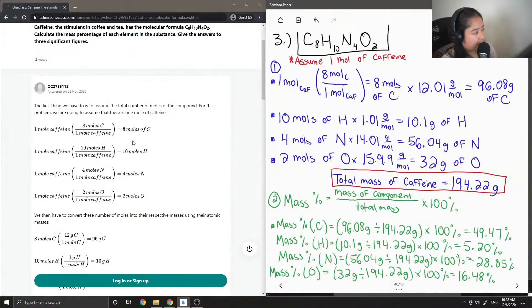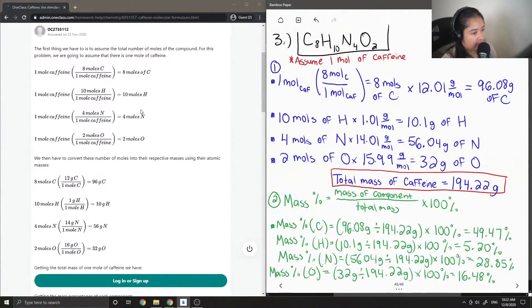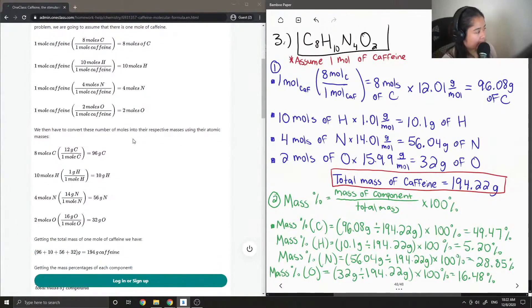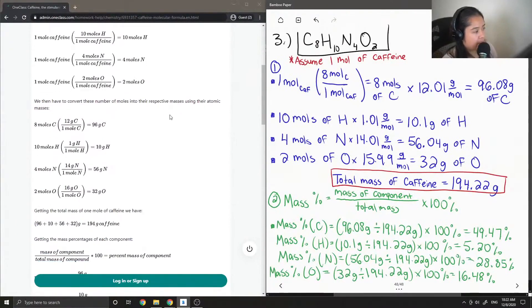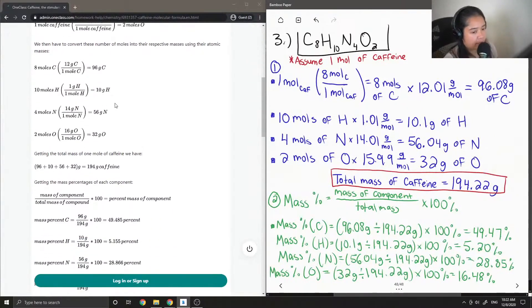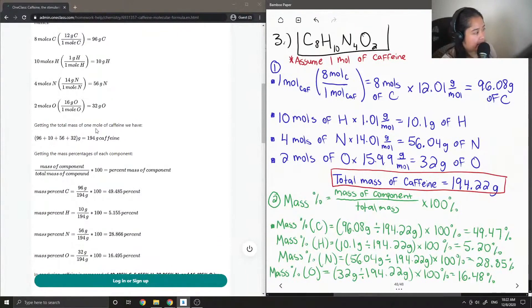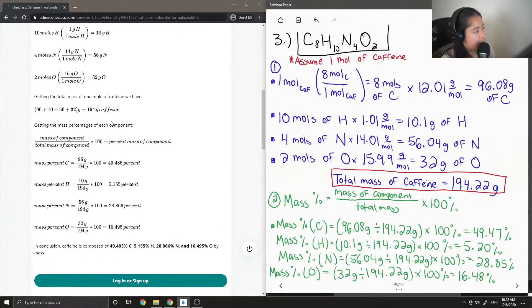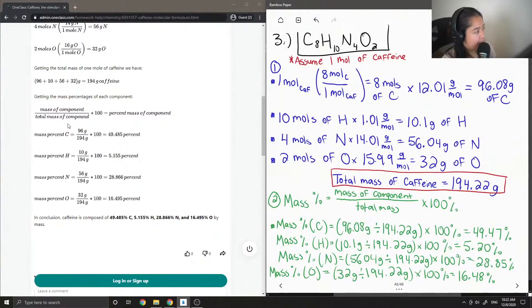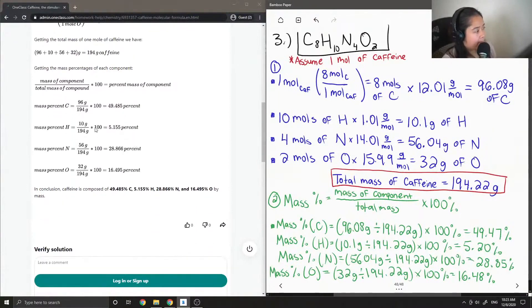Okay so they showed how they got 8 moles of carbon, 10 moles of hydrogen, 4 moles of nitrogen, 2 moles of oxygen. We then have to convert these number of moles into their respective masses using their atomic masses. So they showed the multiplication to get 96 grams carbon, 10 grams hydrogen, 56 grams nitrogen, 32 grams oxygen. Getting the total mass of 1 mole of caffeine we have 194 grams. And then getting the mass percentages of each component, the mass of the component divided by total mass of compound times 100 gives us the percent mass.